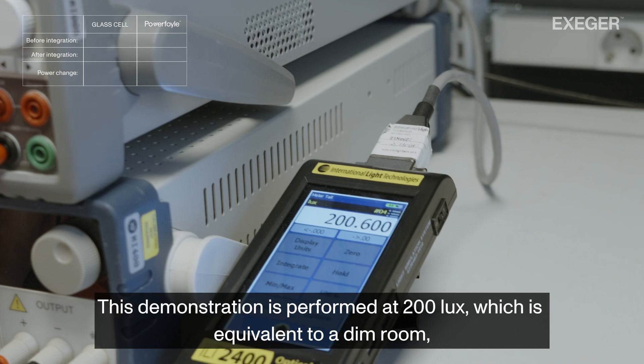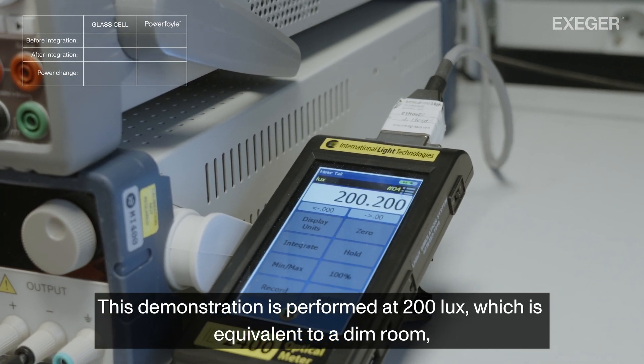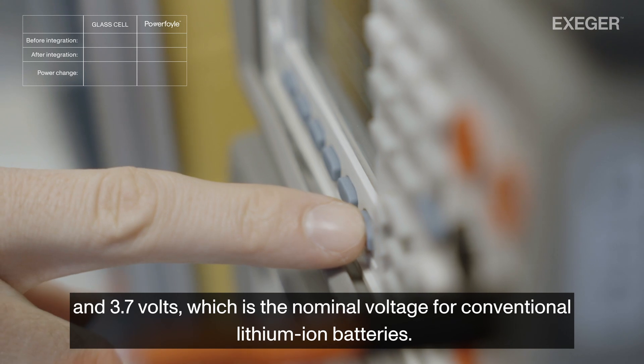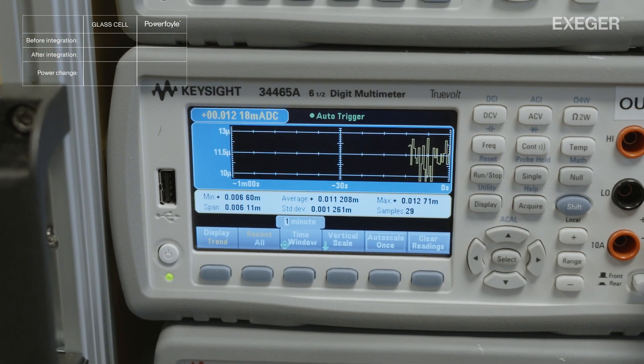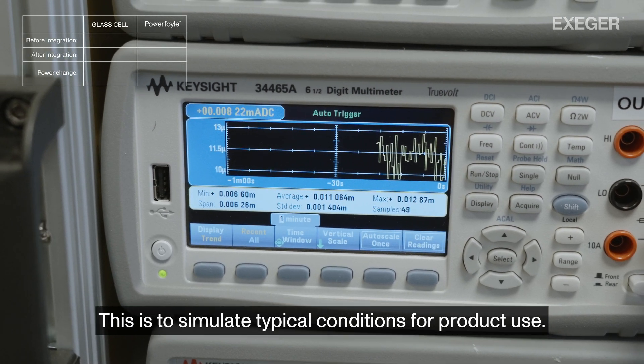This demonstration is performed at 200 lux, which is equivalent to a dim room, and 3.7 volts, which is the nominal voltage for conventional lithium-ion batteries. This is to simulate typical conditions for product use.